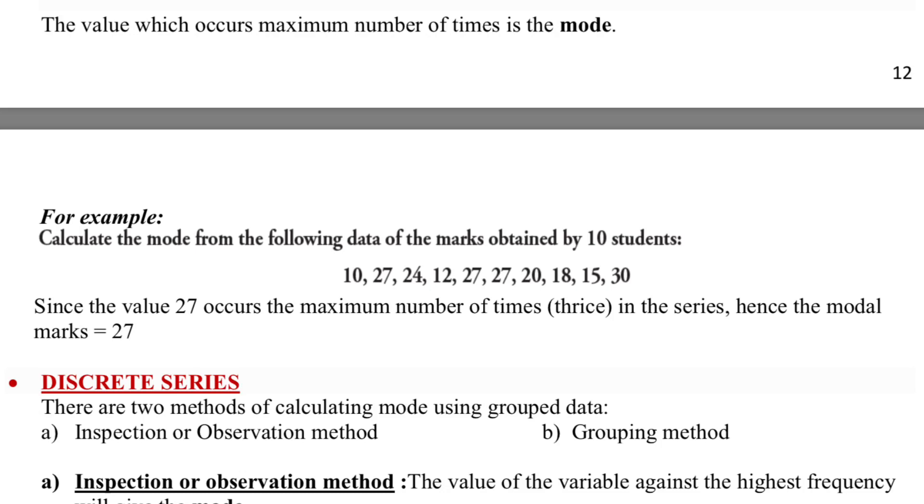For example, calculate the mode from the following data of the marks obtained by 10 students: 10, 27, 24, 12, 27, 27, 20, 18, 15, 30. You will notice that the value 27 occurs the maximum number of times, that is three times in the series. Therefore, the mode of marks would be in this case 27.